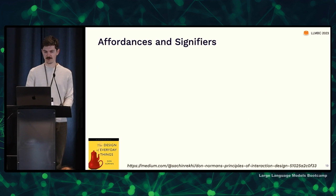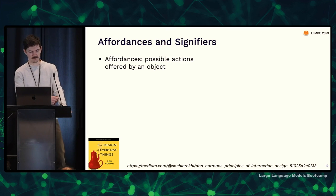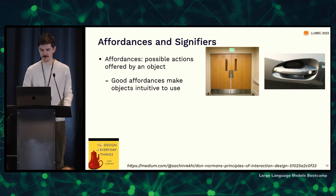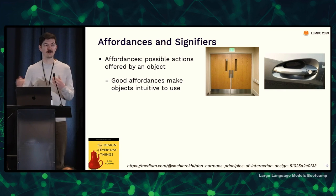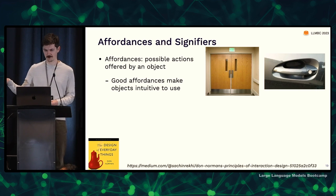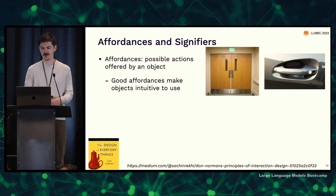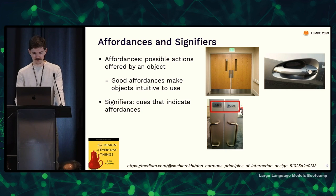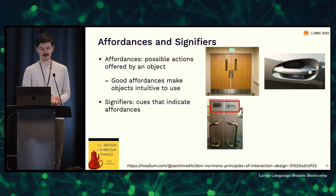Affordances are the possible actions offered by an object. When you look at a door, it might be obvious how to use it, or it might not be. If it is obvious, that's a good affordance. The door on the left can only be pushed, whereas the car door handle on the right can really only be pulled — it looks like something you should pull. That makes the object intuitive to use. If the object is not intuitive, you might need a visual cue, called a signifier.